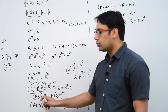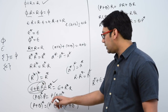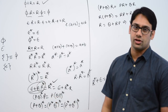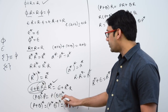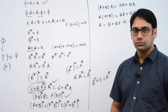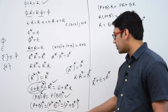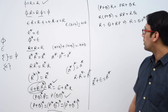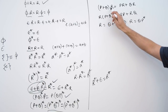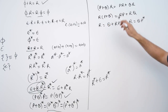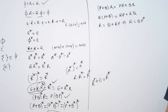If you do (pq)* concatenated with p, this is equal to p concatenated with (qp)*. If we have (p plus q)*, then this is equivalent to that expression. And when we have (p plus q) concatenated with r, then this is equal to p·r plus q·r.